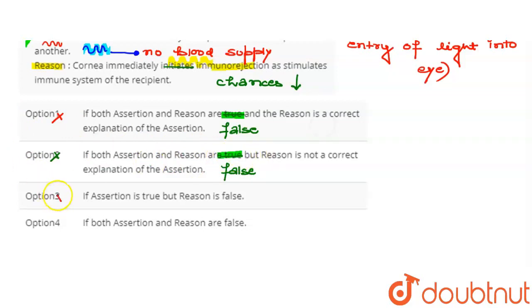Third option is: assertion is true but reason is false. Again this option is wrong because assertion is also a false statement.